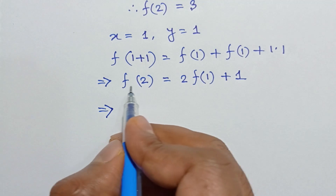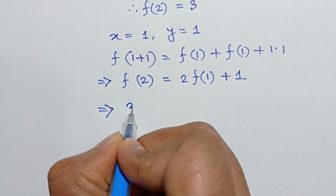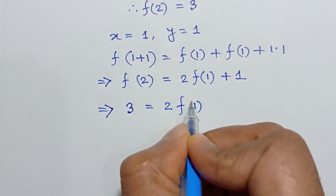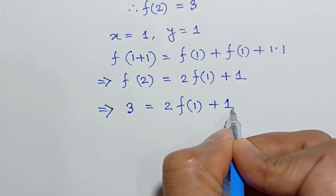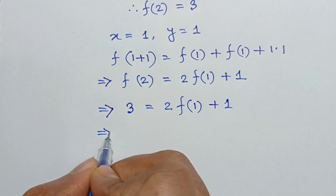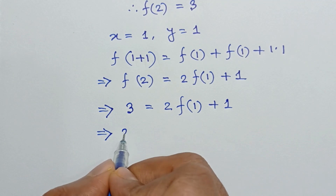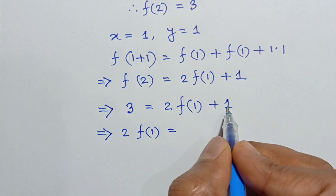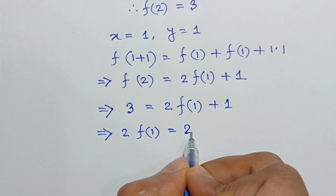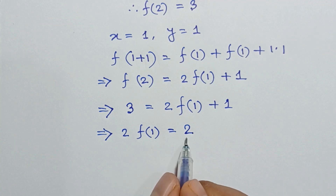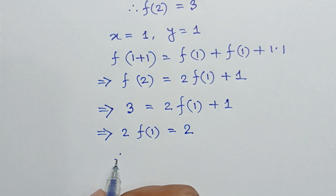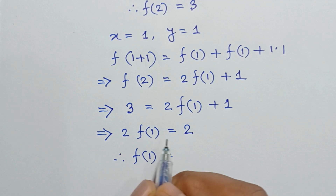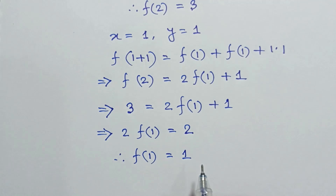Since f(2) = 3, we have 3 = 2·f(1) + 1. So 2·f(1) = 3 − 1 = 2. Dividing both sides by 2, we get f(1) = 1.